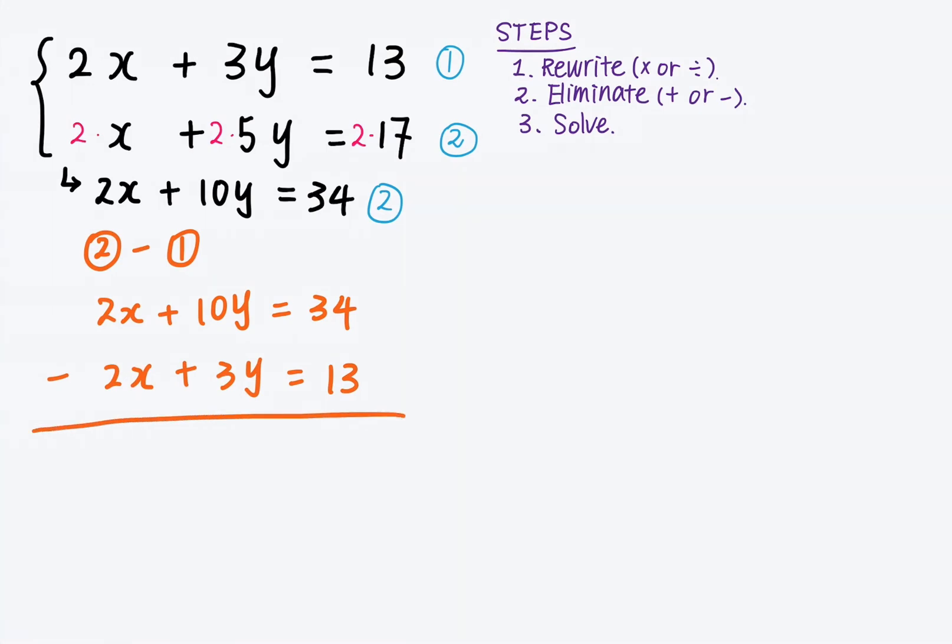OK, so again, we're collecting like terms. 2x minus 2x equals 0x. So now the x term is gone and 10y minus 3y is equal to 7y. 34 minus 13 equals 21. OK, so now my equation becomes 0x, which is 0, plus 7y equals 21. And I can solve for y by dividing both sides by 7. Y is equal to 21 divided by 7, which is 3.